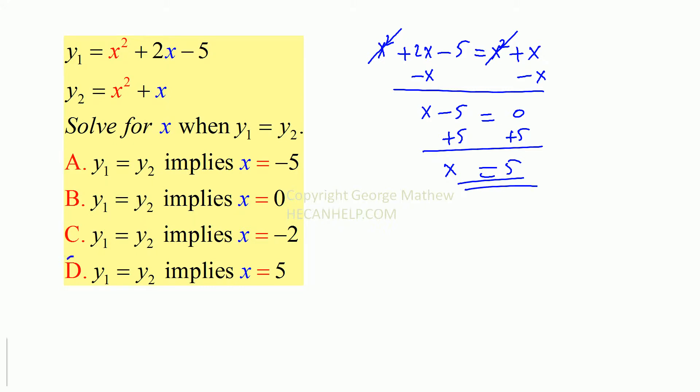So the answer is D. Let's check that out. y1 is equal to x squared plus 2x minus 5. When x is equal to 5, what do you get for y1? y2 is equal to x squared plus x. x is equal to 5. What is y2?